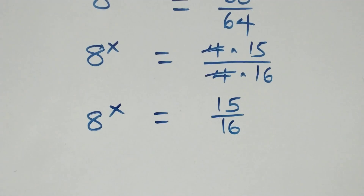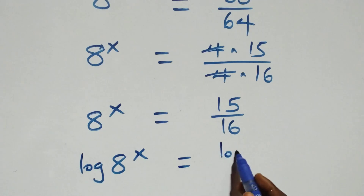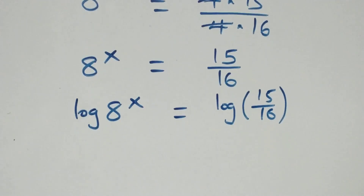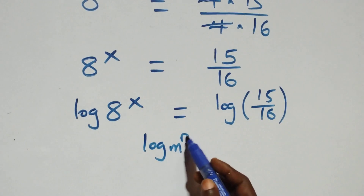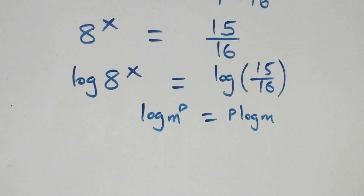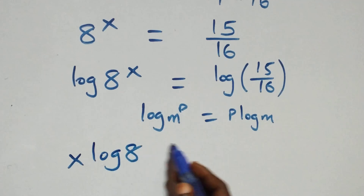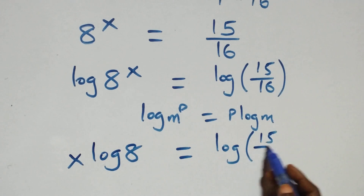At this here, we take the log on both sides — log on both sides — and we have log of 8 raised to power x equals to log of 15 over 16. We apply the power rule of logs, so what we have becomes x log 8 equals to log 15 over 16.